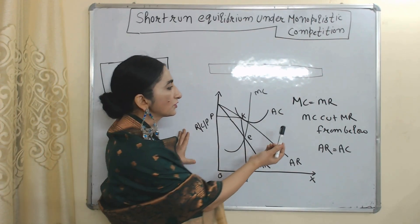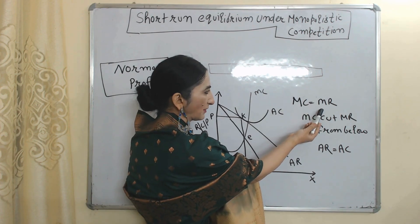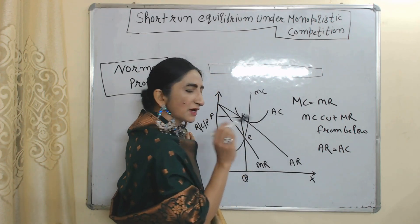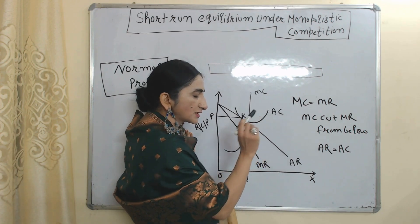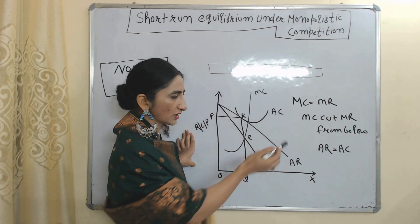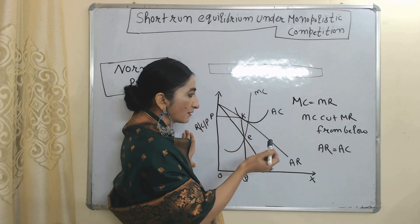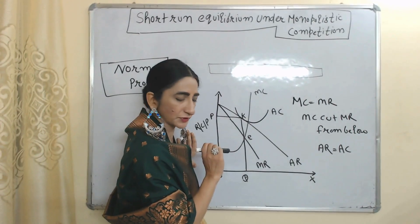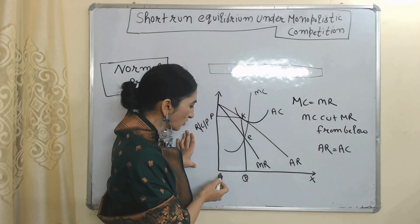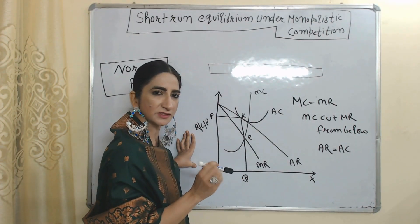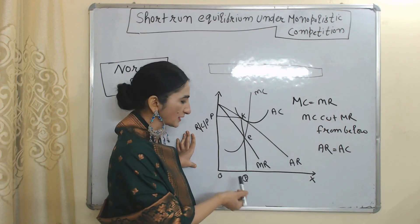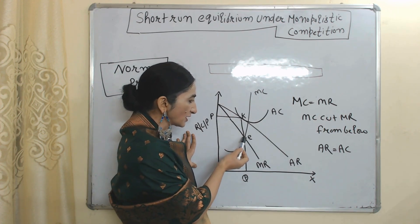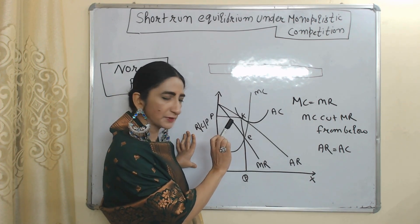Now we are going to talk about normal profit. Two conditions remain the same: MC equals MR, and marginal cost cuts marginal revenue from below, as these are stable equilibrium conditions. But in the case of normal profit, average revenue is equal to average cost. In this diagram, at point E, MC equals MR and MC cuts MR from below.